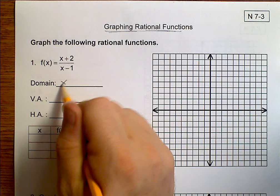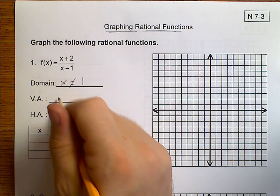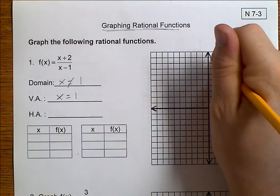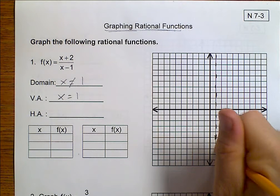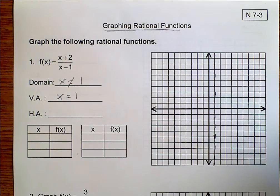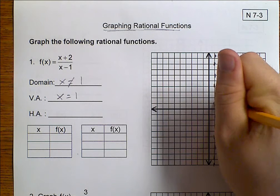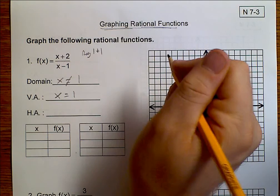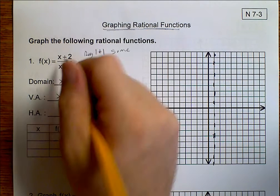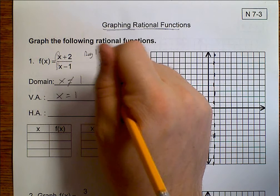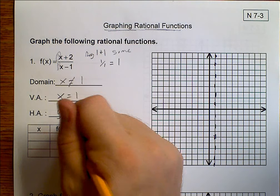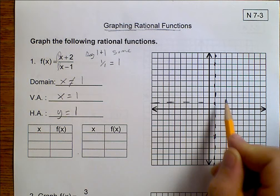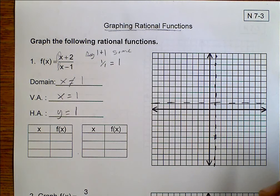First off, our domain is that x cannot equal 1. So we have a vertical asymptote at x equals 1. So come over here to x equals 1. And you want to just kind of put a dashed line to represent your asymptote.